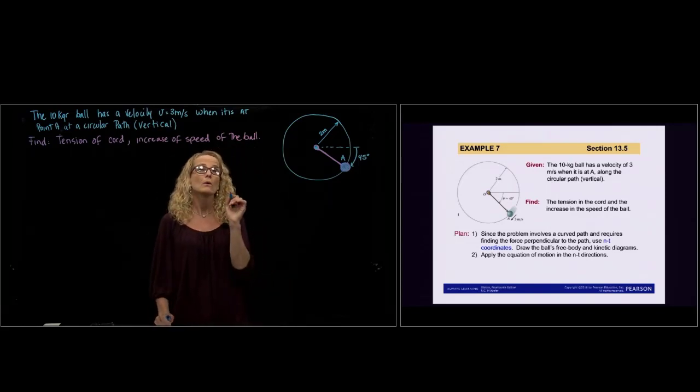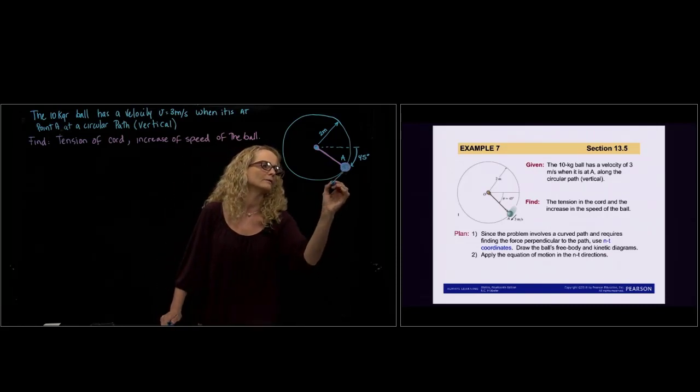We know always the velocity is tangential to the trajectory. So we know the direction of that velocity is 3 meters per second in this direction.